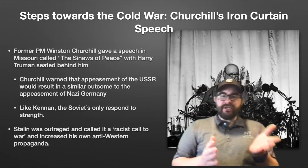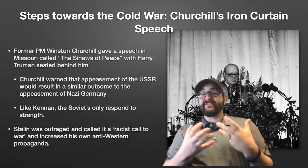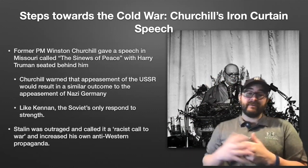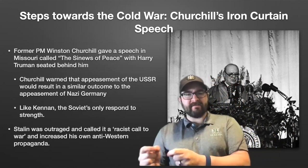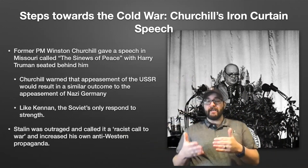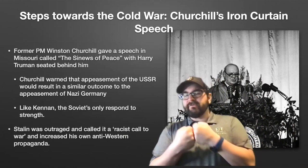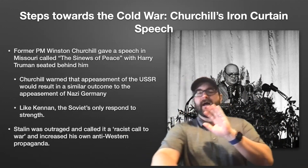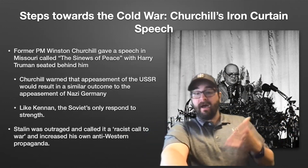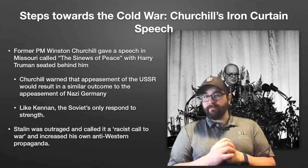Not long after, Winston Churchill gave a speech in Missouri, speaking directly in front of President Harry Truman. Known as the 'Sinews of Peace' but more commonly called the Iron Curtain speech, Churchill warned against the appeasement of the Soviet Union — much as he had warned against the appeasement of Adolf Hitler in the 1930s. Like Kennan, Churchill said the Soviet Union would only respond to acts of strength, pushing the United States and the West to take a strong hand against Soviet expansion. Stalin was outraged at the comparison of him to Hitler, given that the Soviets lost tens of millions of people fighting to defeat him, and he increased his own anti-Western propaganda in response.